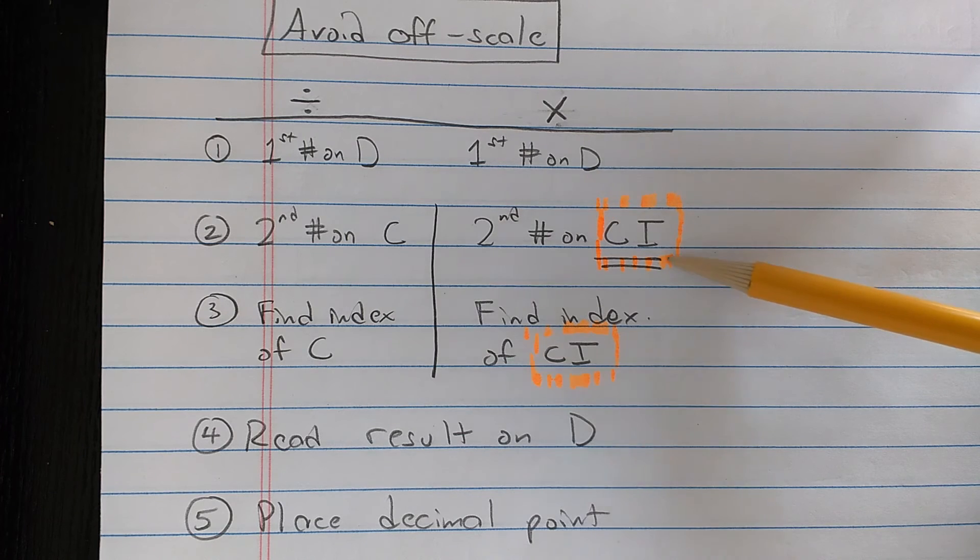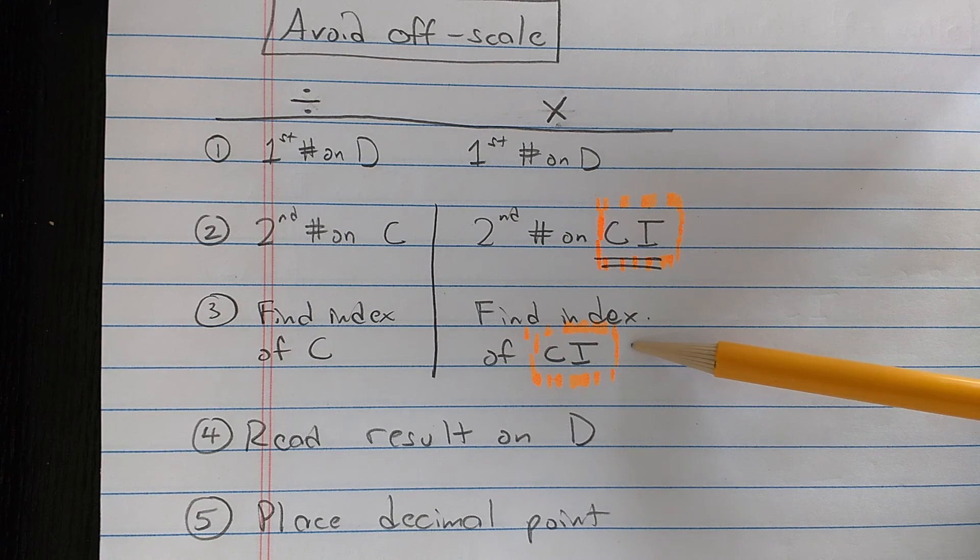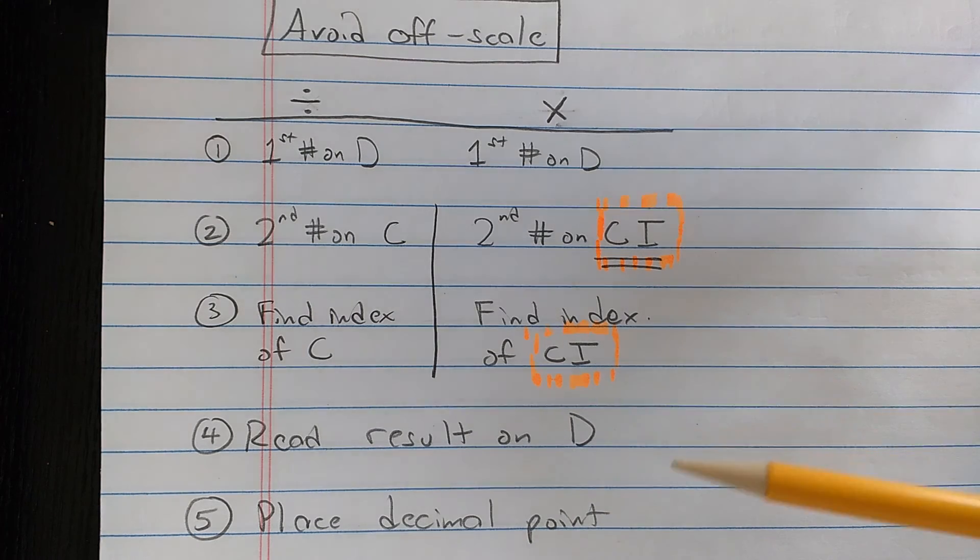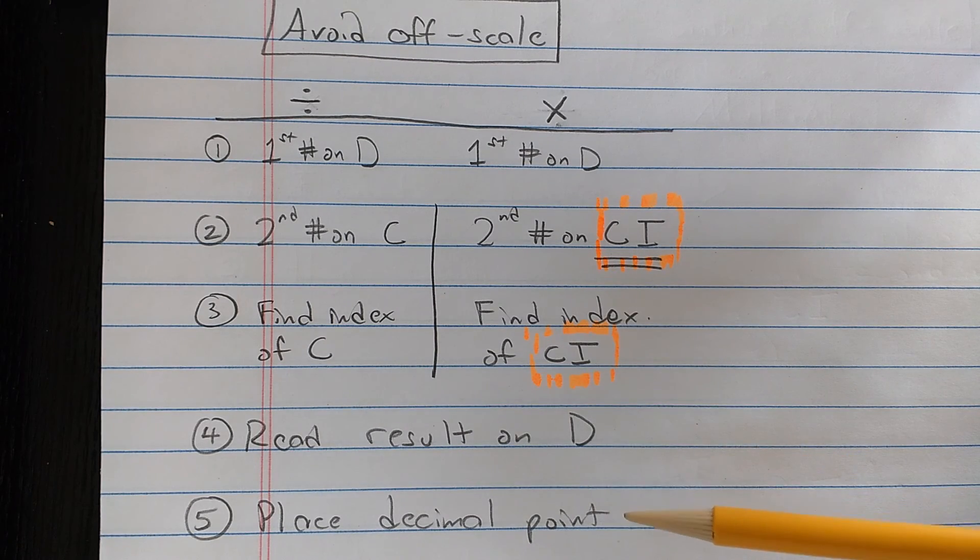Find the first number on the D scale, find the second number on the CI scale, instead of the C scale, find the index of the CI scale, either the right or the left index will be on scale, read the result on the D scale, and then using estimation, place a decimal point.